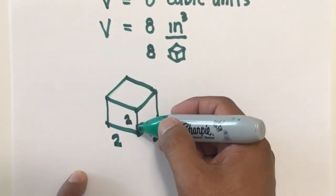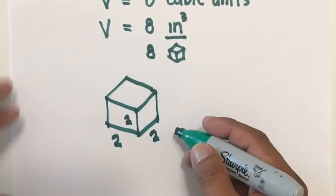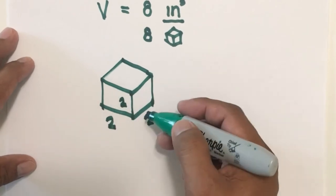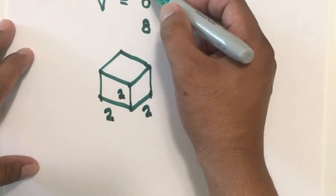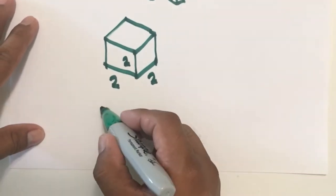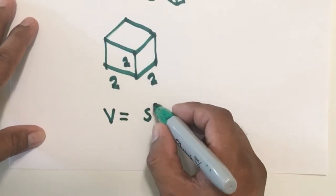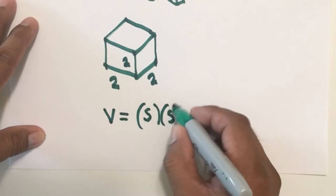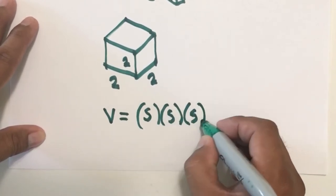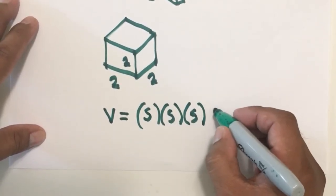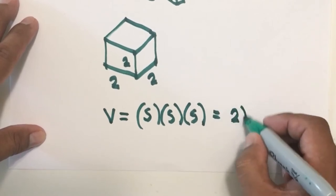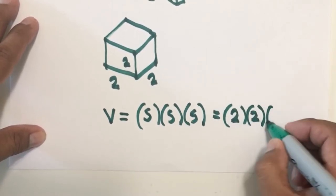So the length, the width, and the height are all 2 inches. And we call that also as the side length. To be able to get these 8 cubic units, what you are going to do is just multiply all those side lengths. So you have the side multiplied by the side multiplied by the side. And so this is equal to 2 times 2 times 2.